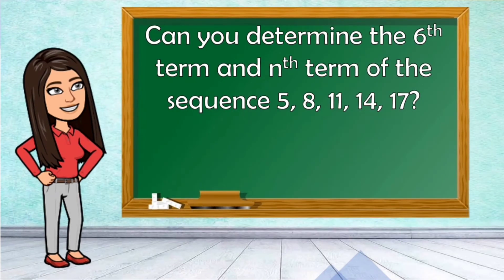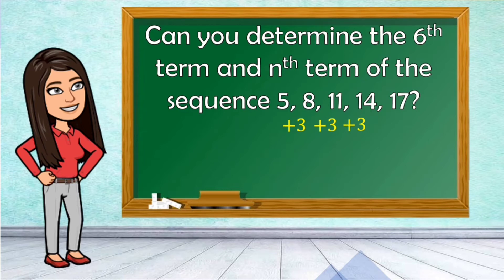Can you determine the sixth term and nth term of the sequence 5, 8, 11, 14, 17? First, to get the sixth term, we need to identify the pattern. Just add 3 to the previous term to get the next term. 5 plus 3 is 8, 8 plus 3 is 11, 11 plus 3 is 14, and 14 plus 3 is 17.